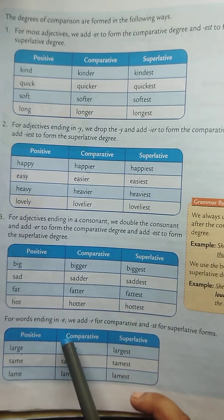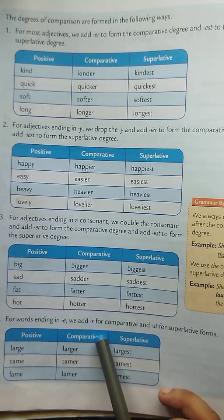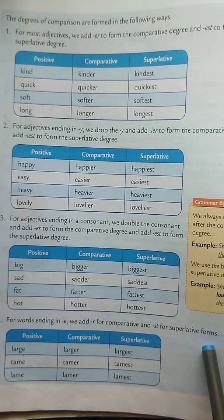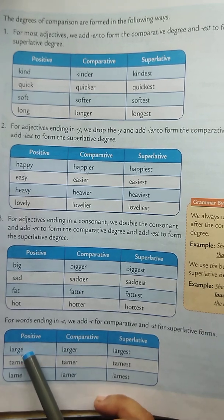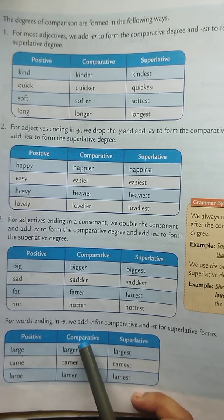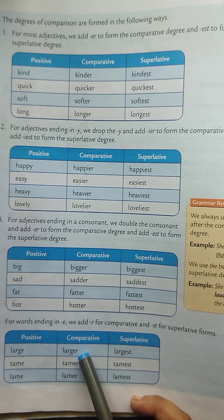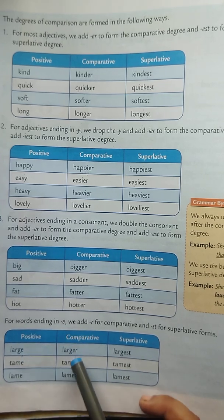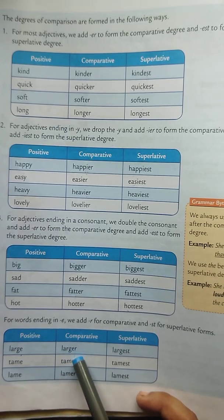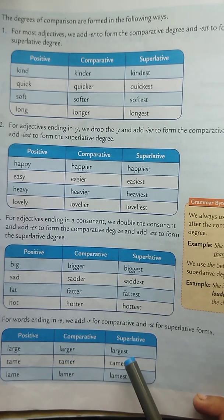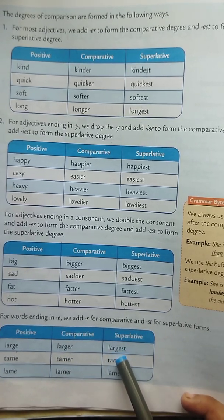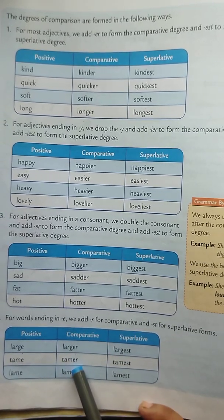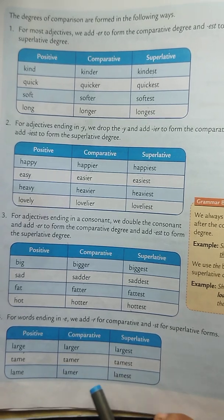For words ending in E, we add R for the comparative and ST for the superlative forms. For example: large — the end letter is E, so comparative is larger (L-A-R-G-E-R) and superlative is largest (L-A-R-G-E-S-T). Large — larger — largest. Tame — tamer — tamest. Lame — lamer — lamest.